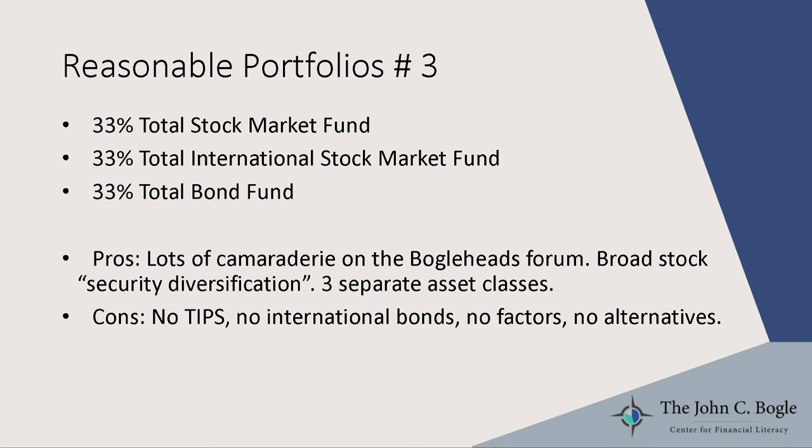Next is the three-fund portfolio, very popular on the Bogleheads forum: total stock market index, total international stock market index, and total bond index. If you do poorly, you'll have a lot of friends doing just as poorly — lots of camaraderie. Taylor Larimore is probably the most profound advocate. You do get three separate asset classes. Downsides: no TIPS, no international bonds, no muni bonds, no factors to tilt to, no alternatives. But it's certainly reasonable.